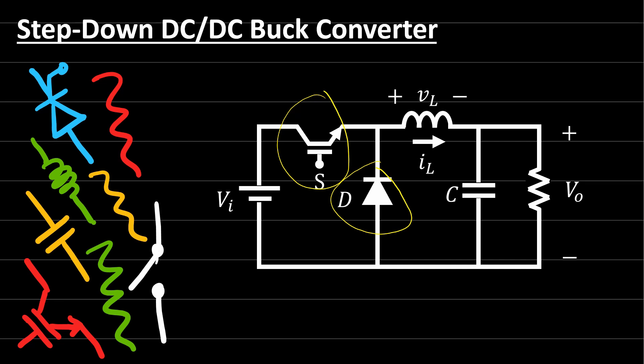One of the switches is the active switch, which is the transistor, and the other one is a passive switch, which is the diode. Both of these switches accumulate the energy inside the inductor, and as a result the accumulated energy in the inductor is translated to a higher current at the output. According to the law of conservation of energy, which states that the total energy of an ideal lossless system remains constant, the output voltage will decrease.